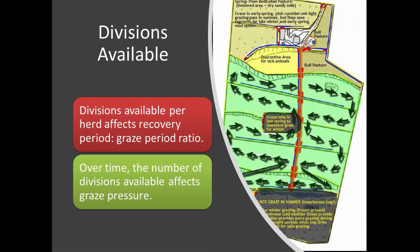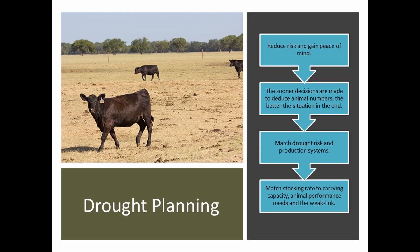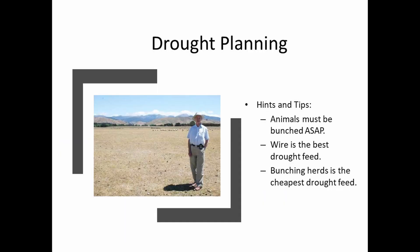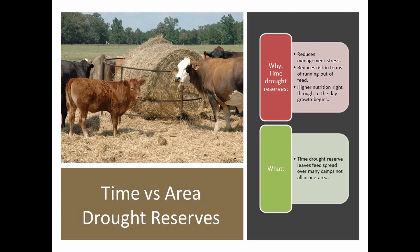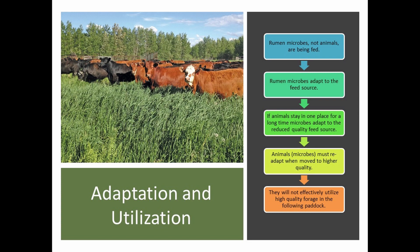Divisions available per herd affect the recovery period. Over time, the number of divisions available affects the grass pressure. As we have noted this year in numerous areas of the world, the major variable in all this is the environment and those things that affect it. We've had areas that have been totally flooded, areas that have experienced record drought, and other areas that have had more rainfall and as a result have had their maximum yield of grasses. Addressing this is what we call adaptive planning — you adapt your plan to the environmental factors that have changed or impacted upon your plan.